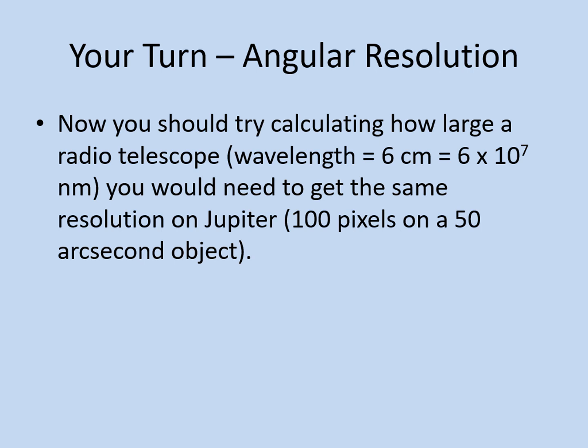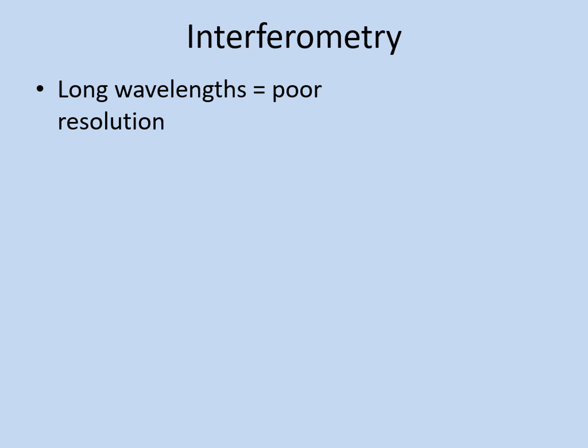Now try calculating the size a radio telescope working at 6 centimeters would have to be in order to get as good a resolution on Jupiter as the optical telescope we just looked at. Don't forget to convert your answer into meters. As mentioned, the longest wavelengths will have the worst angular resolutions. Since radio waves define the long wavelength end of the electromagnetic spectrum, we get the worst angular resolution in radio for any given telescope size. One solution is to make very big telescopes — the largest radio telescopes can be hundreds of meters or more across — and we can do this because long waves don't require a mirror-smooth surface to reflect them, making it easier to build very large telescopes.